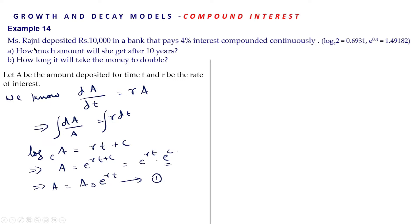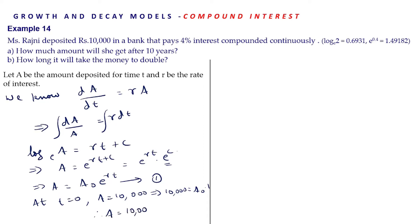Ranjini deposited rupees 10,000, so at time t = 0 the amount deposited is 10,000. Substituting: 10,000 = A₀·e^0 = A₀. Therefore A = 10,000·e^(Rt) — equation 2. This is the required solution for this differential equation.